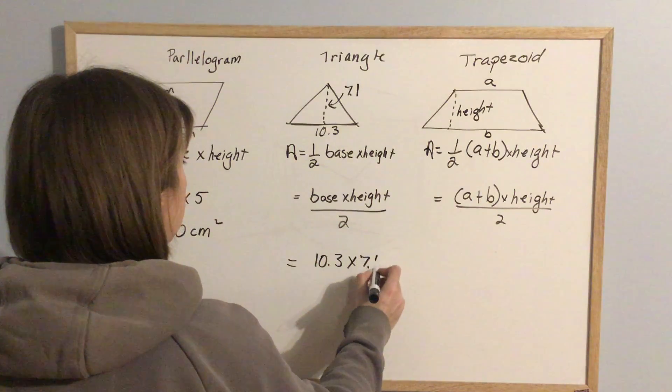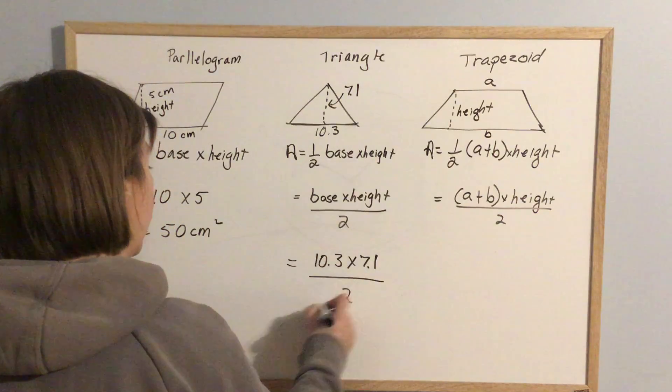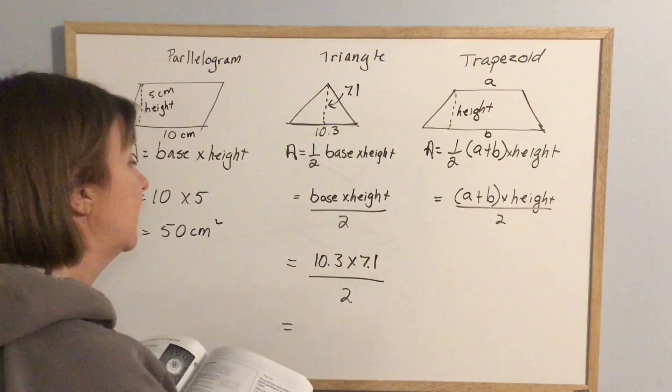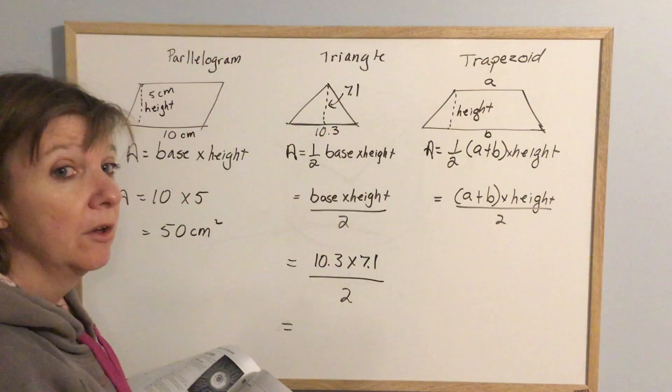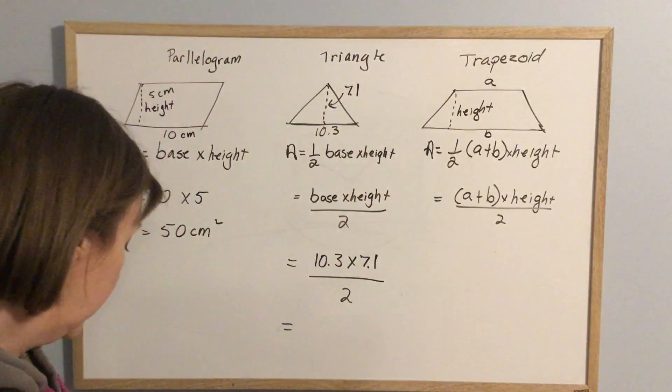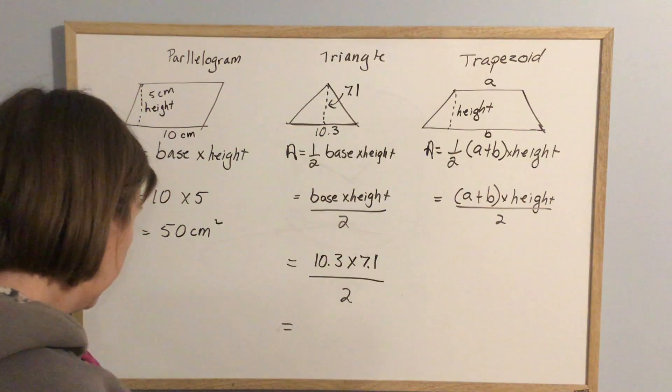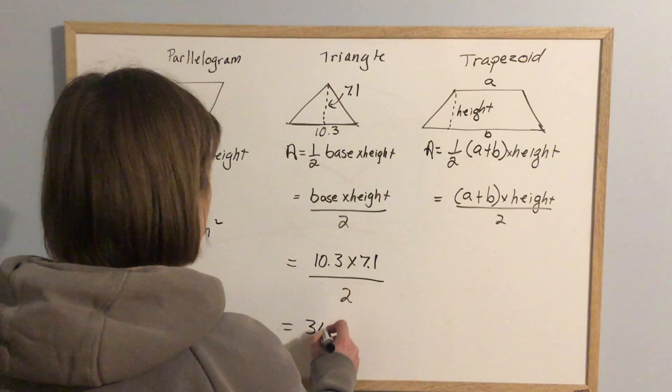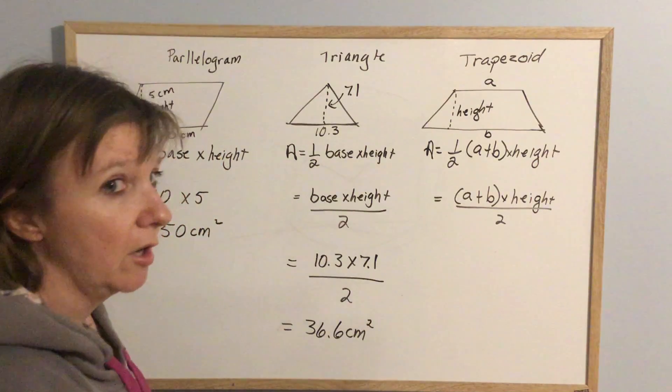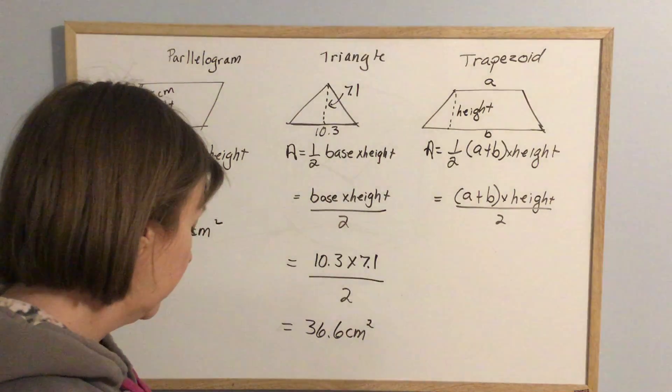And then I divide it by two. Again, pay attention. It shouldn't matter for order of operations on this one, but I tend to do 10.3 times 7.1, figure out what that is, and then divide by two. And turns out it is 36.6 centimeters squared when we round it off to the nearest tenth, which is what they said.